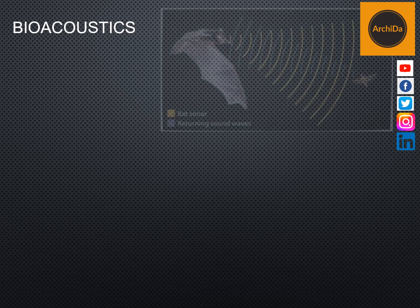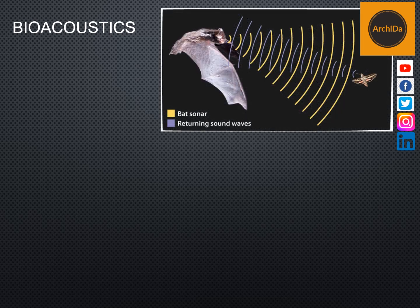Under bioacoustics is echolocation. It is the use of sound waves and echoes to determine where objects are in space. Bats particularly use echolocation to navigate and find food in the dark. To echolocate, bats send out sound waves from the mouth or nose. When the sound waves hit an object, they produce echoes. The echo bounces off the objects and returns to the bat's ears. Bats listen to the echoes to figure out where the object is, how big it is, and its shape.